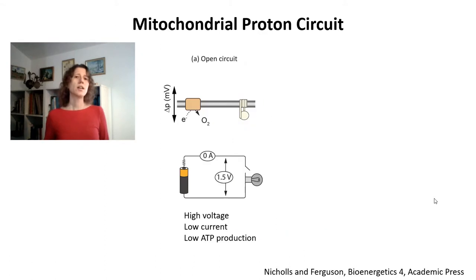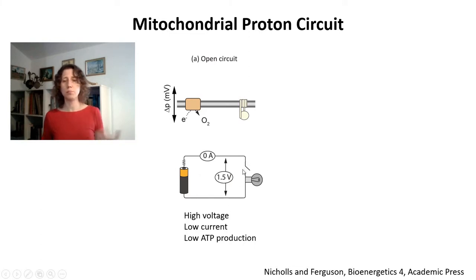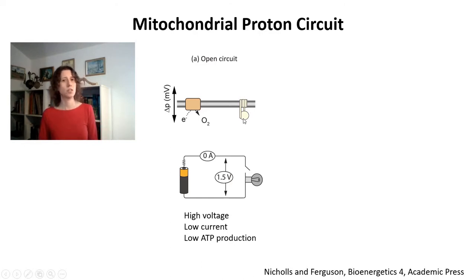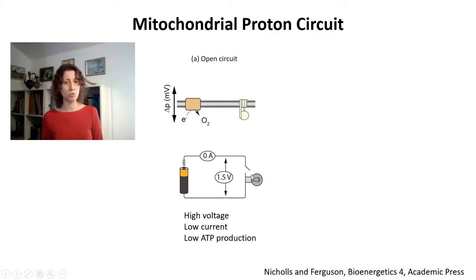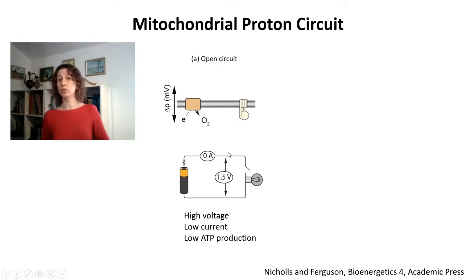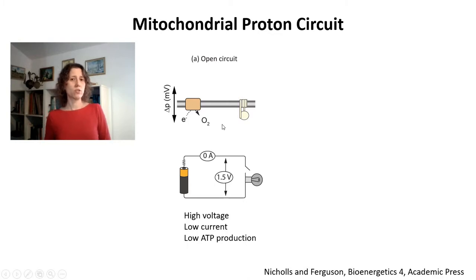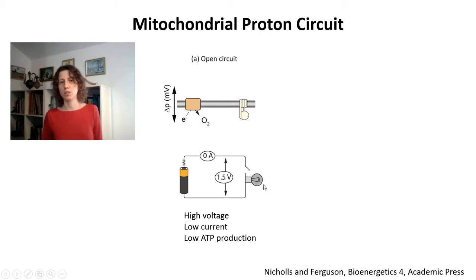This proton circuit can be thought about as a very simple electrical circuit in which you have a battery and a light bulb, the light bulb being the ATP synthase. A condition in which you have this light bulb turned off — for example if you inhibited ATP synthase with oligomycin — is a condition in which you're going to have a buildup of very high proton motive force. Under these conditions, electron transport is going to be slow and inhibited. You're going to have low current because it's very difficult to pump protons against high voltage, and you're going to have low ATP production.